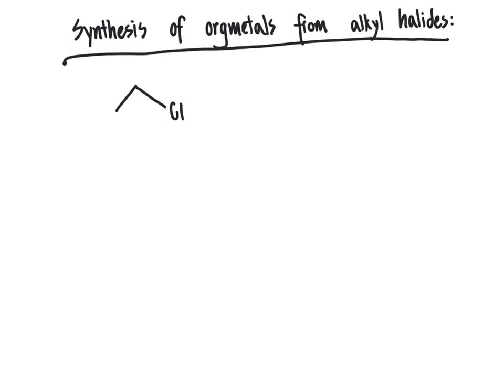To look at how we go about synthesizing organometallic compounds from alkyl halides, what we'll do is take this starting alkyl halide and react it with two moles of lithium metal per one mole of alkyl halide.